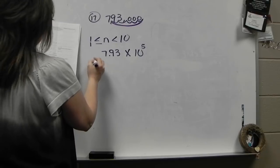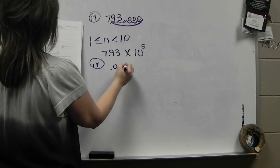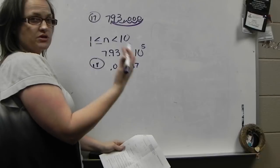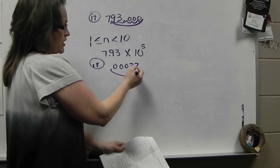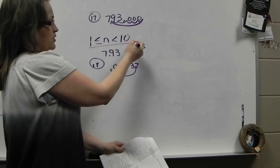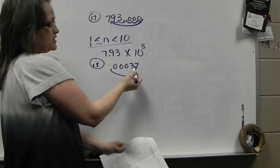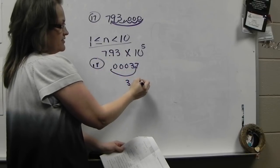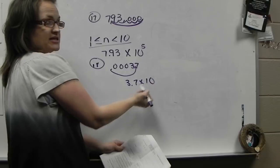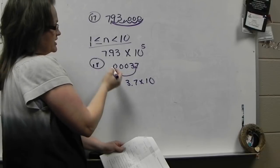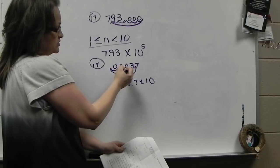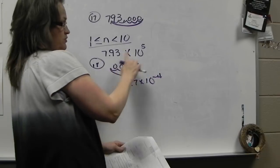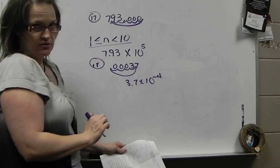The next problem, number 18. This time the number is small, and we want to move the decimal to the right to make it fit the between 1 and 10 rule. So 3.7 would fit that rule — 3.7 times 10 to how many places did you move your decimal? 1, 2, 3, 4. But this time it will be a negative exponent since we moved the decimal the other direction.